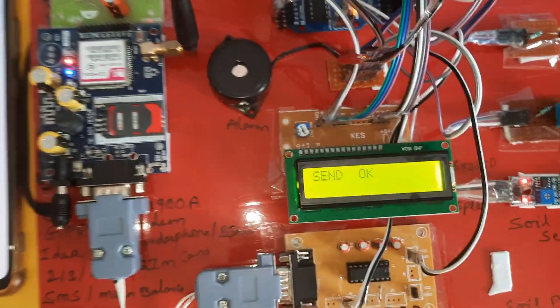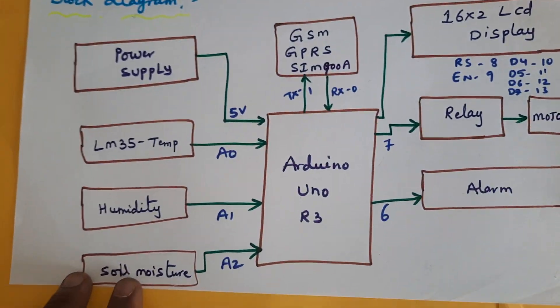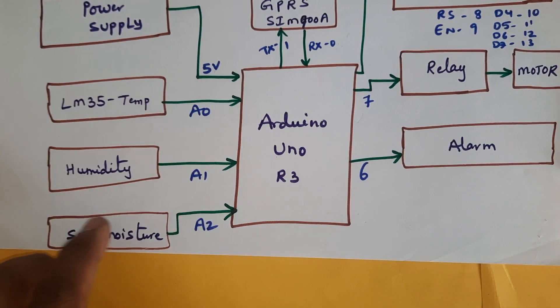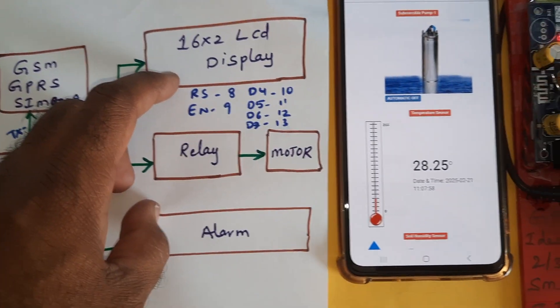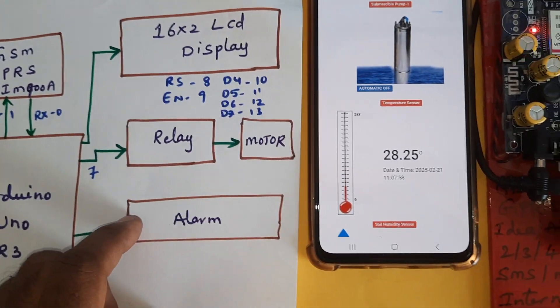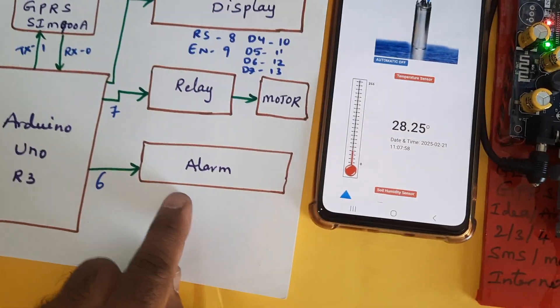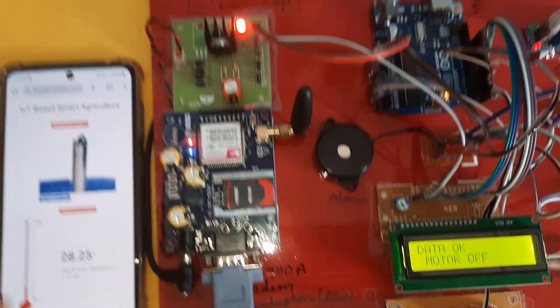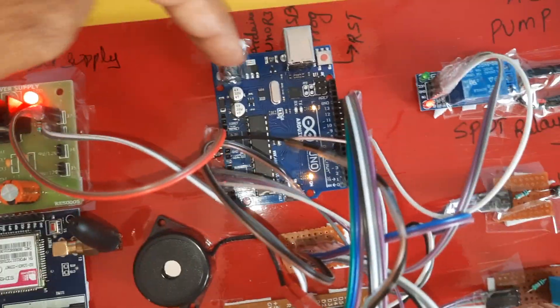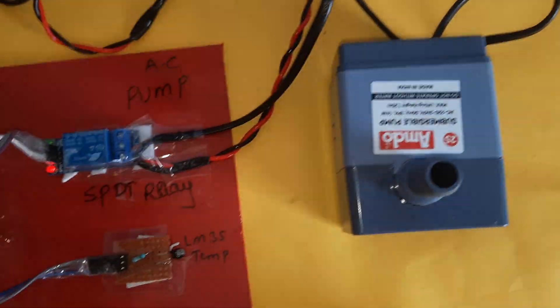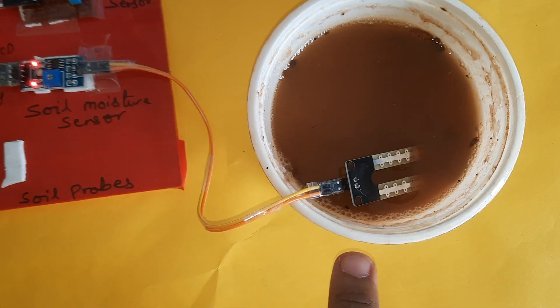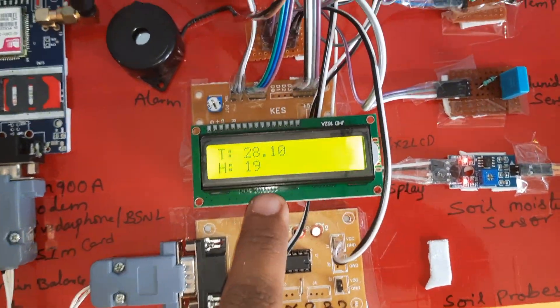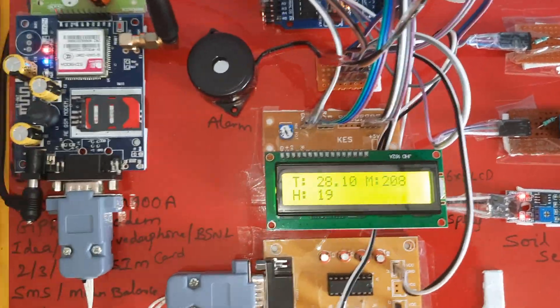Pump off confirmed. Recap of block diagram: temperature sensor, humidity sensor, soil moisture sensor connected to A0, A1, A2. GPRS modem connected via RX/TX pins 0 and 1. 16x2 LCD display on RS, Enable, D4–D7. Pump relay coil on 7th pin, alarm on 6th pin. Components: GSM/GPRS modem SIM 900D, power supply board, Arduino Uno R3, relay coil, AC pump, LM35 temperature sensor, humidity sensor, soil moisture sensor with probes, MAX232 board, and 16x2 LCD display. Data is sent to server every cycle.